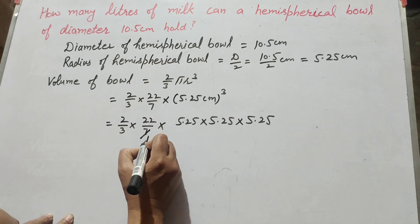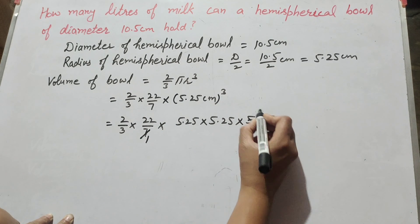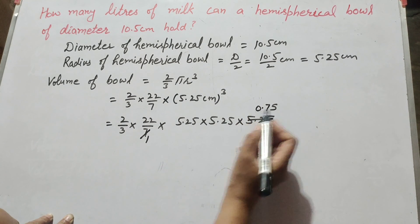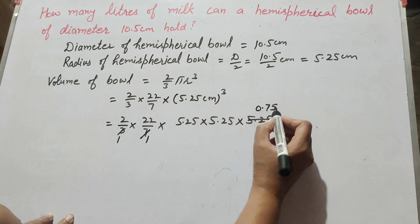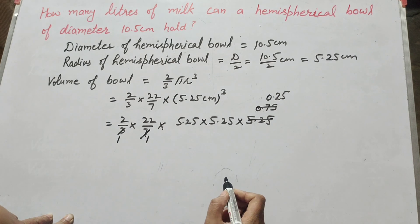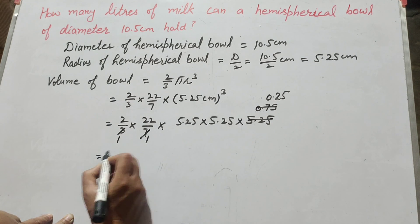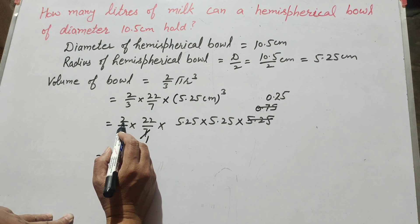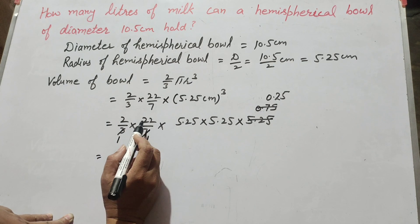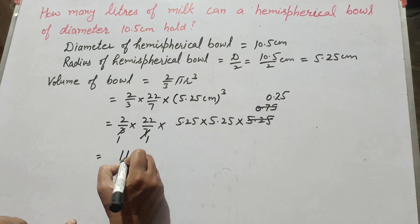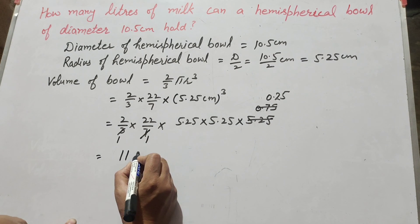Now, 5.25 and 7 are both divisible — dividing gives 0.75, and 0.75 and 3 are both divisible, so we cancel them to get 0.25. Then 0.25 multiplied by 2 gives 0.50, and 0.5 multiplied by 22 gives 11.0.